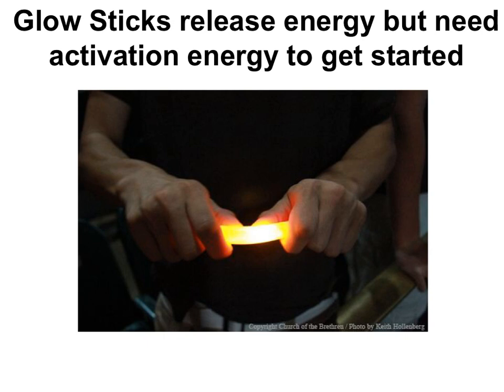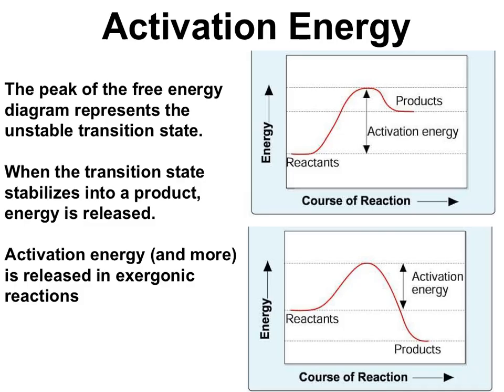Another good example of activation energy is a glow stick. A glow stick gives off light — evidence that a chemical reaction is happening — but it doesn't just happen by itself. You need a little energy input to get it started: when you flex the glow stick and break the tube, that allows the chemicals to mix. On a free energy diagram, this hump from reactants to the peak is the activation energy. Right at the peak, the chemical is in its most unstable transition state — a very high-energy state — before becoming a more stable product.